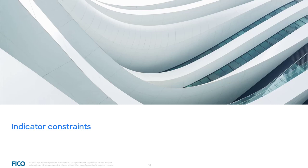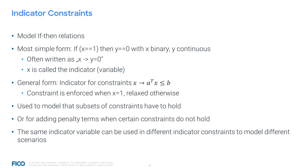The next topic is indicator constraints. These represent another special type of constraints which model if-then relations. The simplest case involves two variables, typically x as a binary and y as a continuous. Such an indicator relation states that if the binary is equal to 1, then the continuous has to be equal to 0; otherwise it might take any value within its domain. This is often written as: x implies y equals 0, where x is called the indicator variable. In the general form, the indicator variable x implies not only the value of a single variable, but a whole constraint of the form A^T x ≤ b. In other words, such a constraint is enforced when the indicator variable is 1, otherwise it can be relaxed.